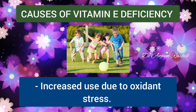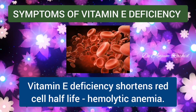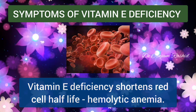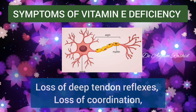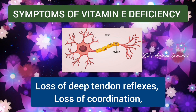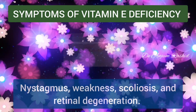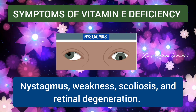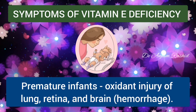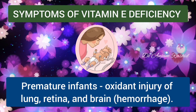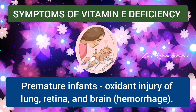Vitamin E deficiency shortens the red cell half-life and this may result in hemolytic anemia. Chronic Vitamin E deficiency results in a progressive neurologic disorder — there is loss of deep tendon reflexes, loss of coordination, vibratory and position sensations, and there may also be nystagmus, weakness, scoliosis, and retinal degeneration. In premature infants, Vitamin E deficiency may contribute to oxidant injury of the lung, retina, and brain, and may also result in brain hemorrhage.